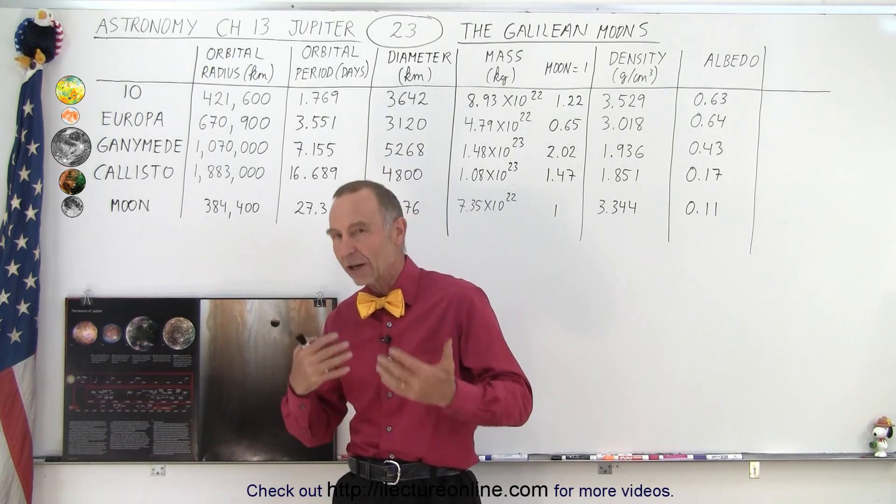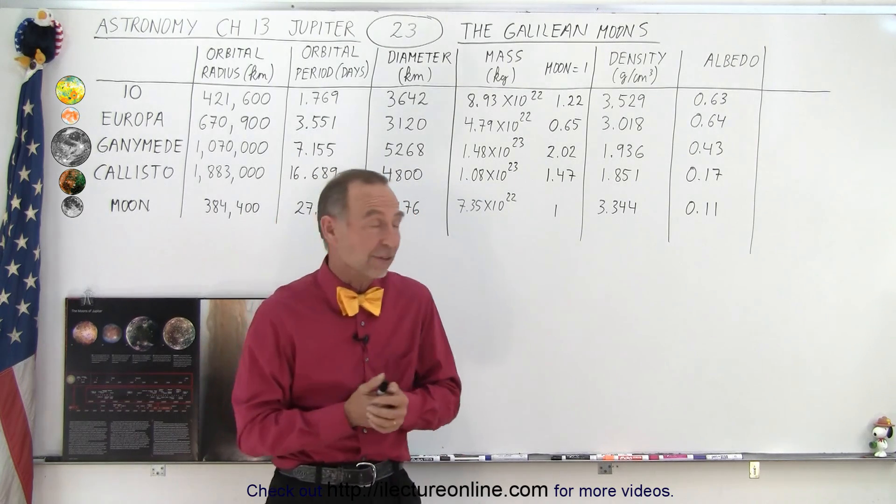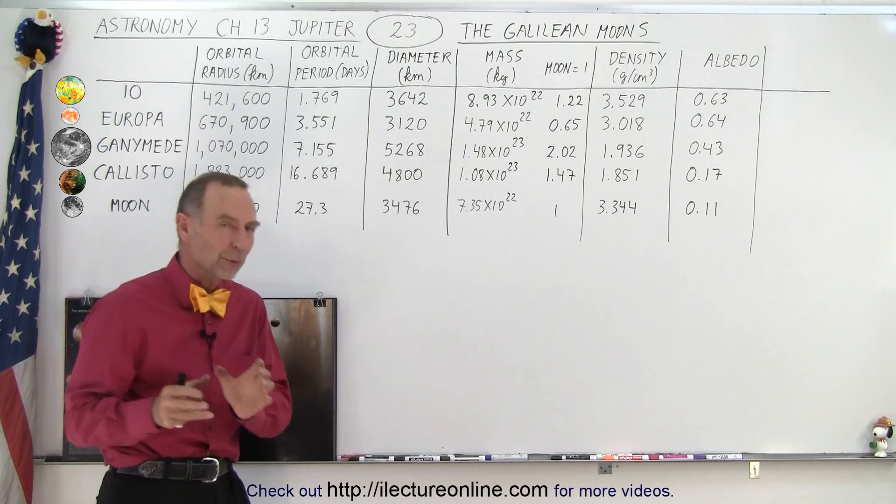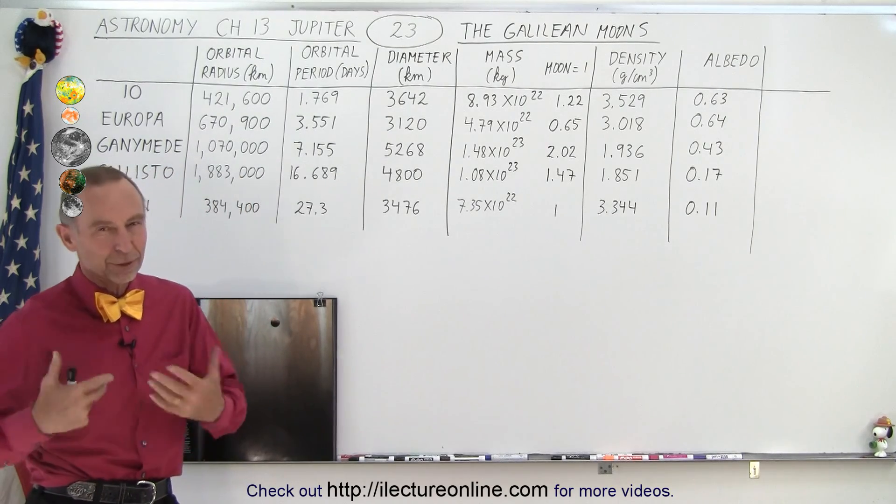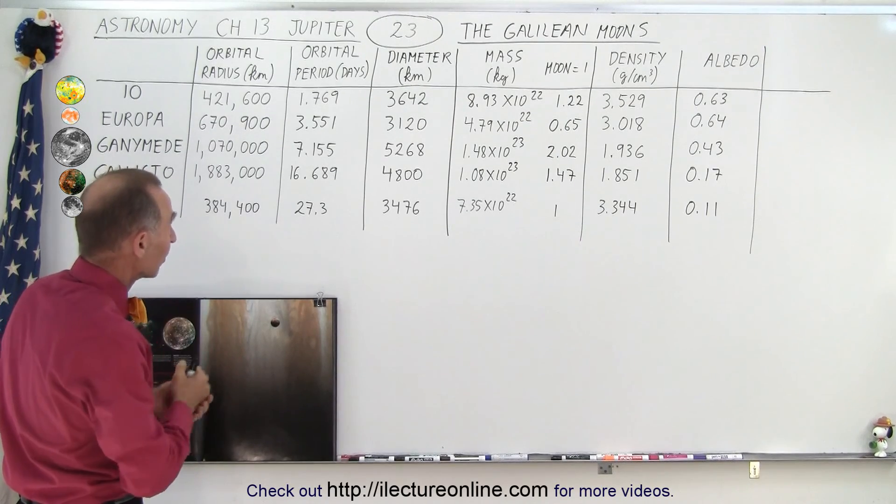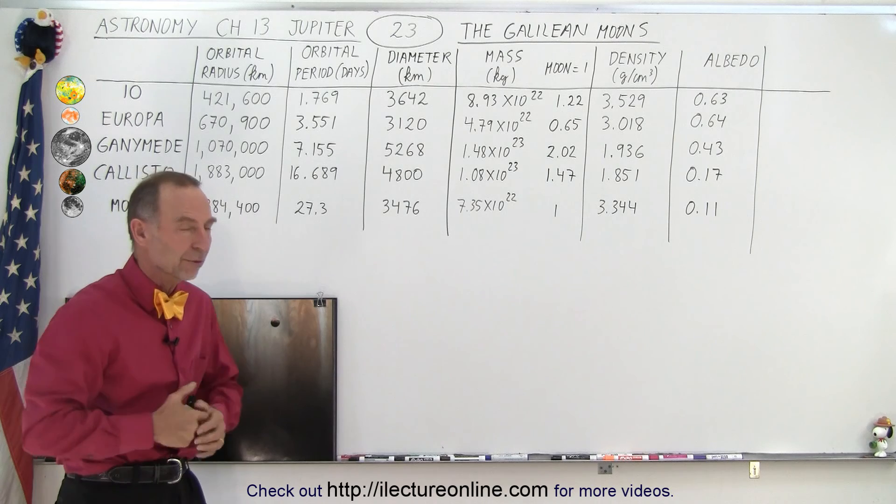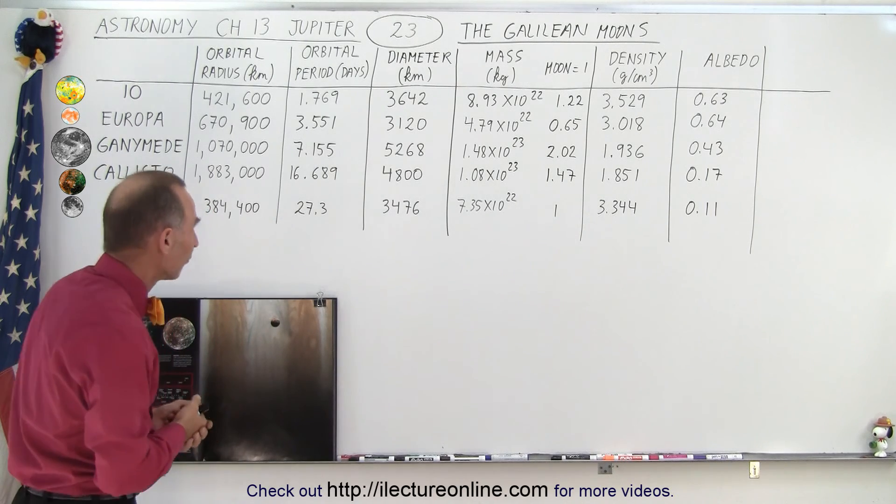In this video, we're simply going to talk about the basic structure and statistics of the four moons, and we're going to compare them to Earth's moon as well. So we're going to talk about the orbital radius, the orbital period, the diameter, the mass, the density, and the albedo, some general facts about the four moons.